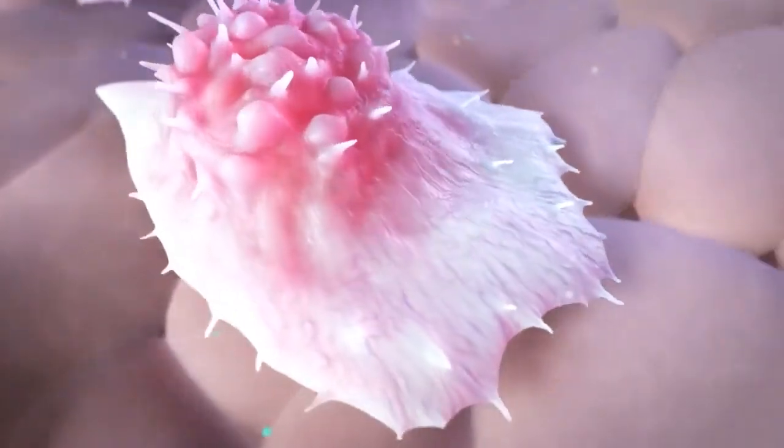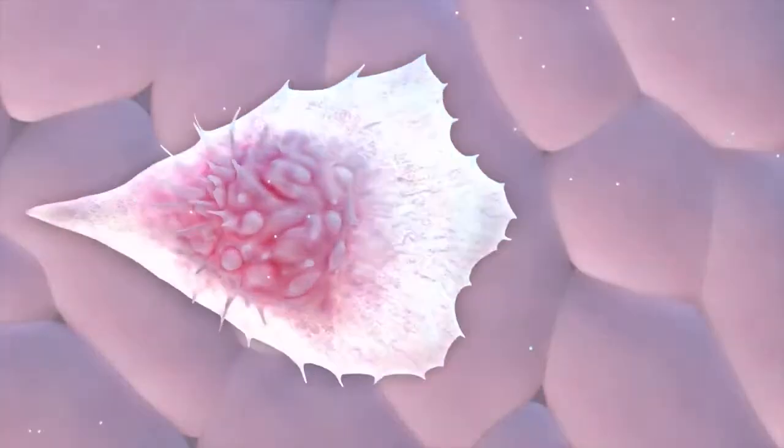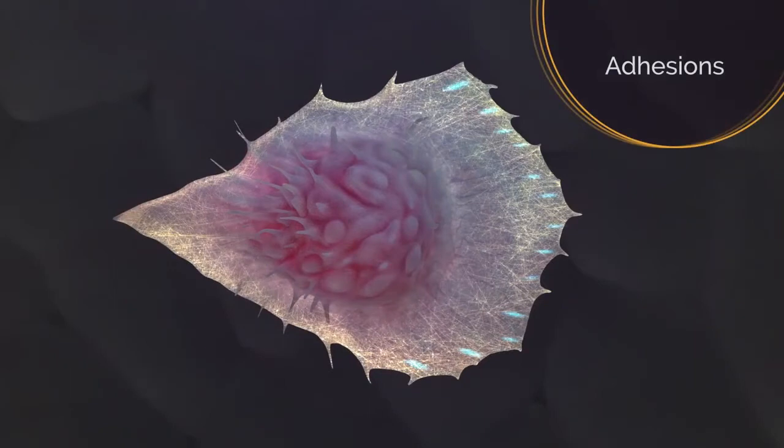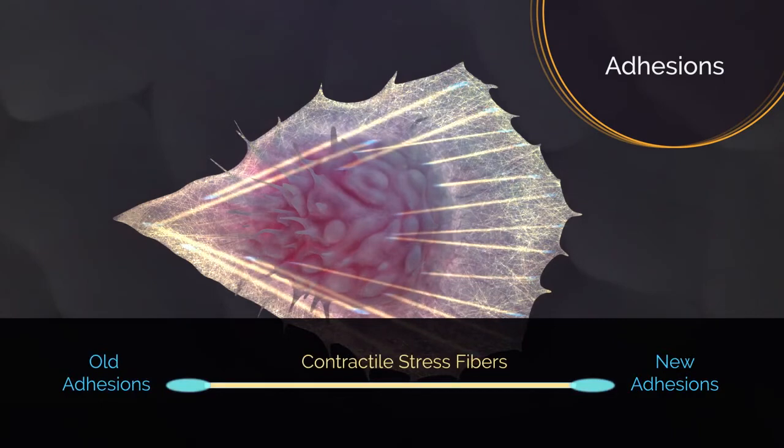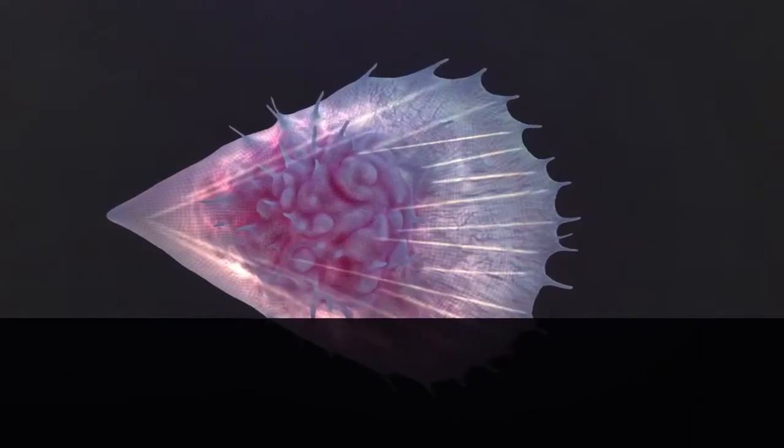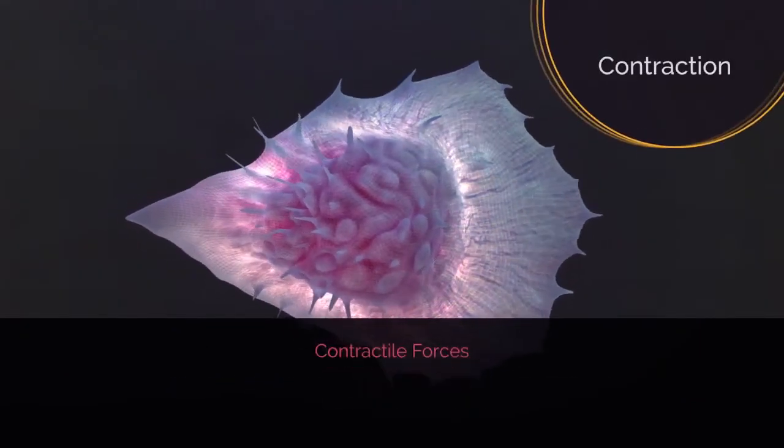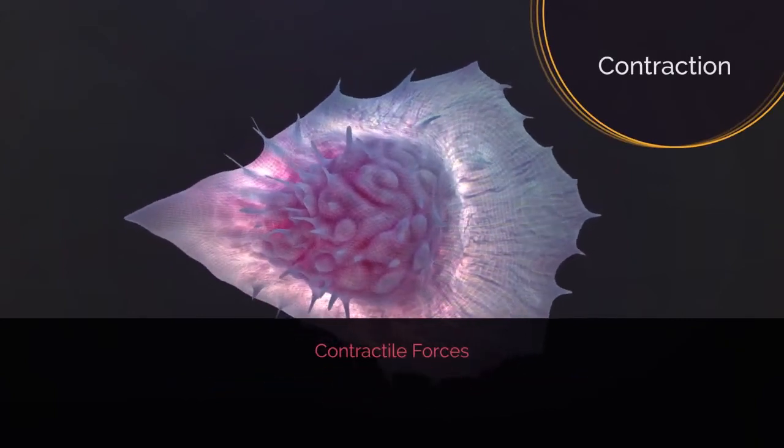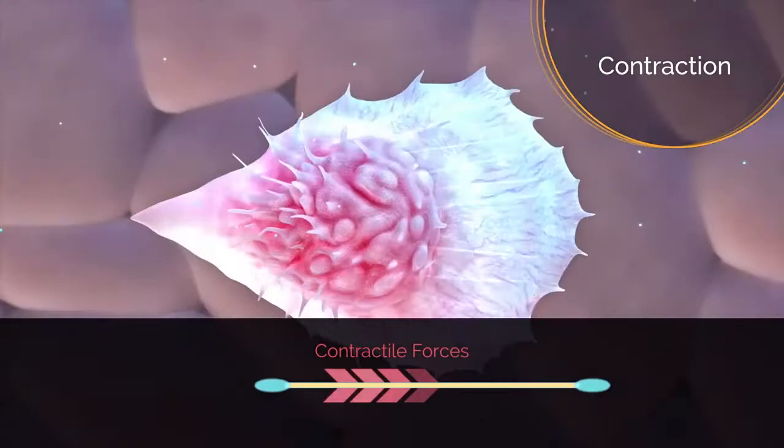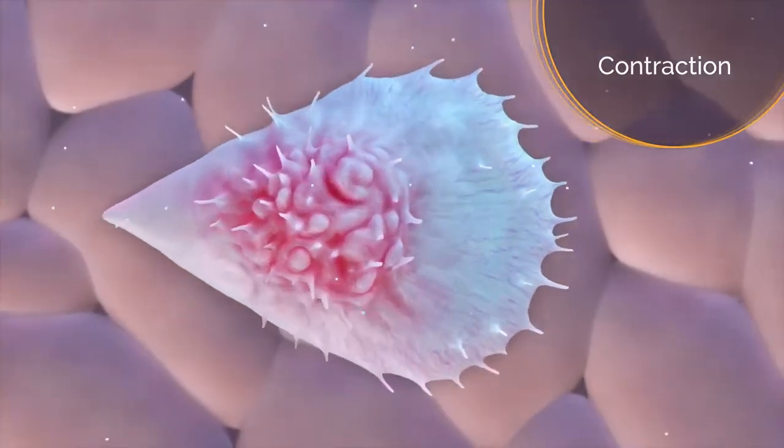As the cell moves forward, adhesions occur along the leading edge of the cell as actin bundles anchor to the surface via adhesion molecules. These newly formed adhesions are connected to old adhesions via contractile stress fibers consisting of myosin filaments and antiparallel actin bundles. The cell is pulled forward mainly by contractile forces generated by myosin acting on the actin filaments. As the contractile fibers contract, the rear of the cell comes forward.